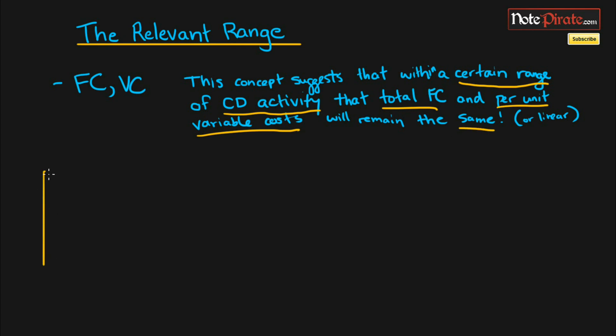So when we went over variable costs and fixed costs in the last tutorial I created this kind of square box divided it into four different quadrants, put variable costs and fixed costs along the top and per unit and total costs along the side, and we noticed that the total fixed costs remain the same within a certain range of cost driver activity and that the variable costs per unit remain the same within a certain range of cost driver activity as well.